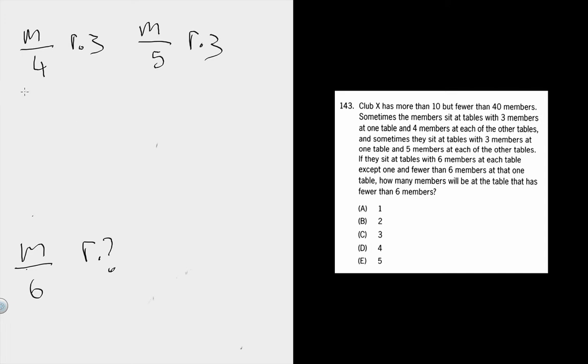You can just make a list if you want. These are the numbers that yield remainder 3 when divided by 4. You could do the same thing with 5, and then you can see where these things intersect. They intersect at 23.